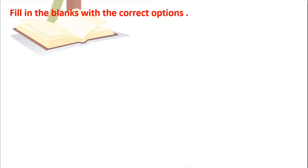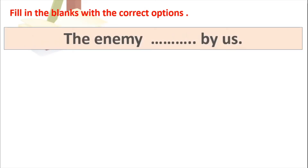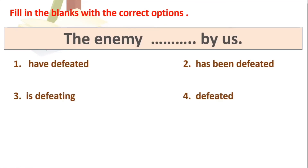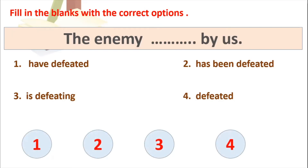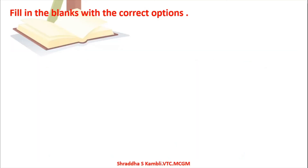Another fill-in-the-blank example: 'The enemy ___ by us.' Options: (1) have defeated by us, (2) has been defeated by us, (3) is defeating by us, (4) defeated by us. Apply the tricks — check tense consistency and grammatical correctness. The answer is answer number 2: 'The enemy has been defeated by us.'